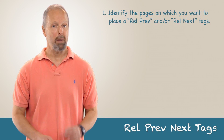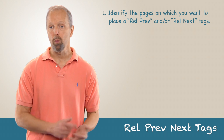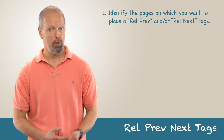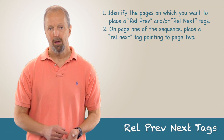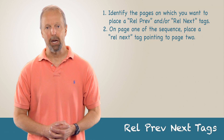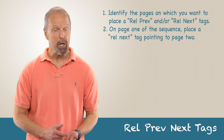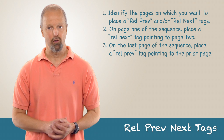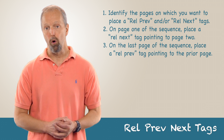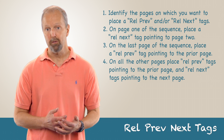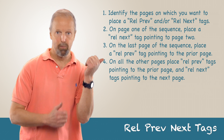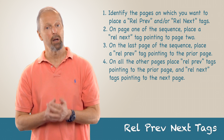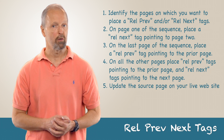Now let's discuss how to implement rel-prev/next tags in a nutshell. Step one: identify the pages on which you want to place rel-prev and/or rel-next tags. Step two: on page one of the sequence, place a rel-next tag pointing to page two. Step three: on the last page of the sequence, place a rel-prev tag pointing to the prior page. Step four: on all of the other pages, place rel-prev tags pointing to the prior page and a rel-next tag pointing to the next page. And step five: update the source page on your live website.